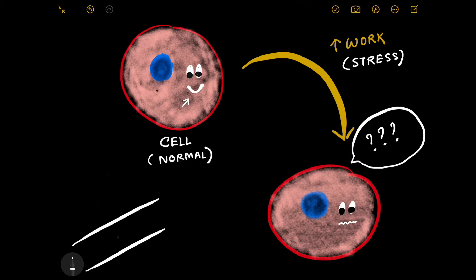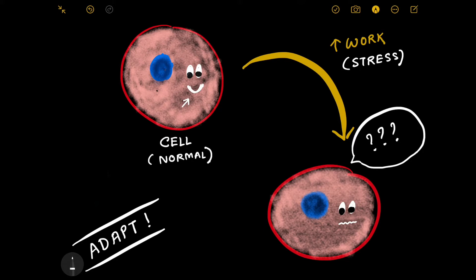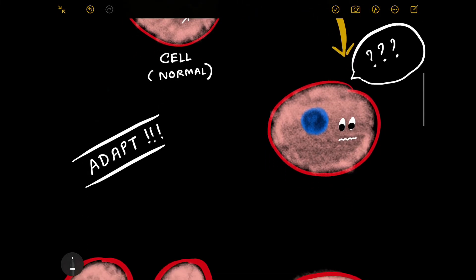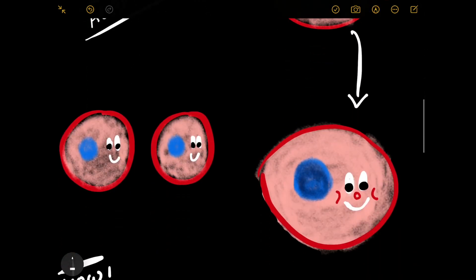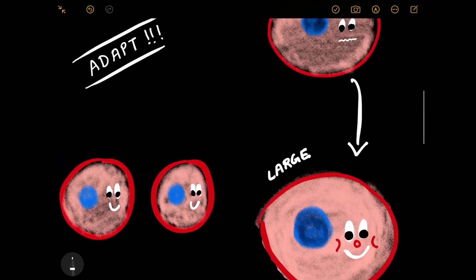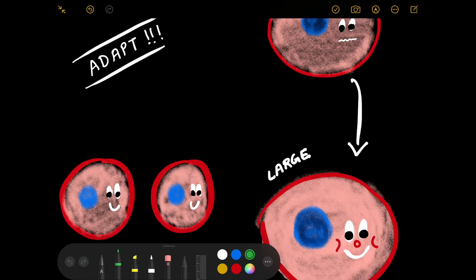The cell thought of devising innovative ideas — the cell thought of adapting. Now how did it adapt? One thing it tried was to increase its size so that it can cope with the increased workload and work more or manage the stress better. So it increased its size and became a large cell. This situation of becoming large in response to stress is known as hypertrophy — that means an increase in the size of a cell in response to stress.